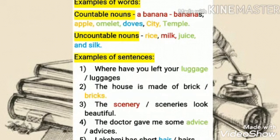Examples of countable nouns: a banana / bananas, apple / apples, omelette / omelettes, city, temple. These words are examples of countable nouns. And uncountable noun examples: rice, sugar, milk, sand, juice, silk — these kinds of words are called uncountable nouns.